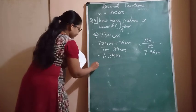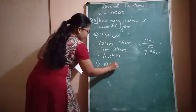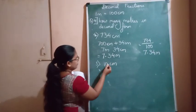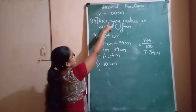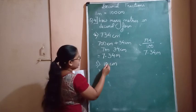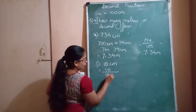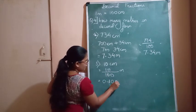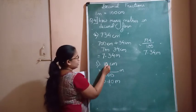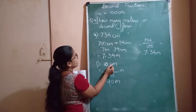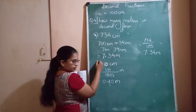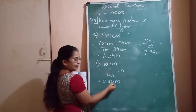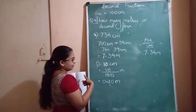The next one is 10 centimeters. To convert 10 centimeters into meters — this is less than 100 — you write it as 10 upon 100 meters, which is nothing but 0.10 meters. Alternatively, since there is no mention of meters you write zero, and then write 10 after the decimal point following the rule we learned earlier.